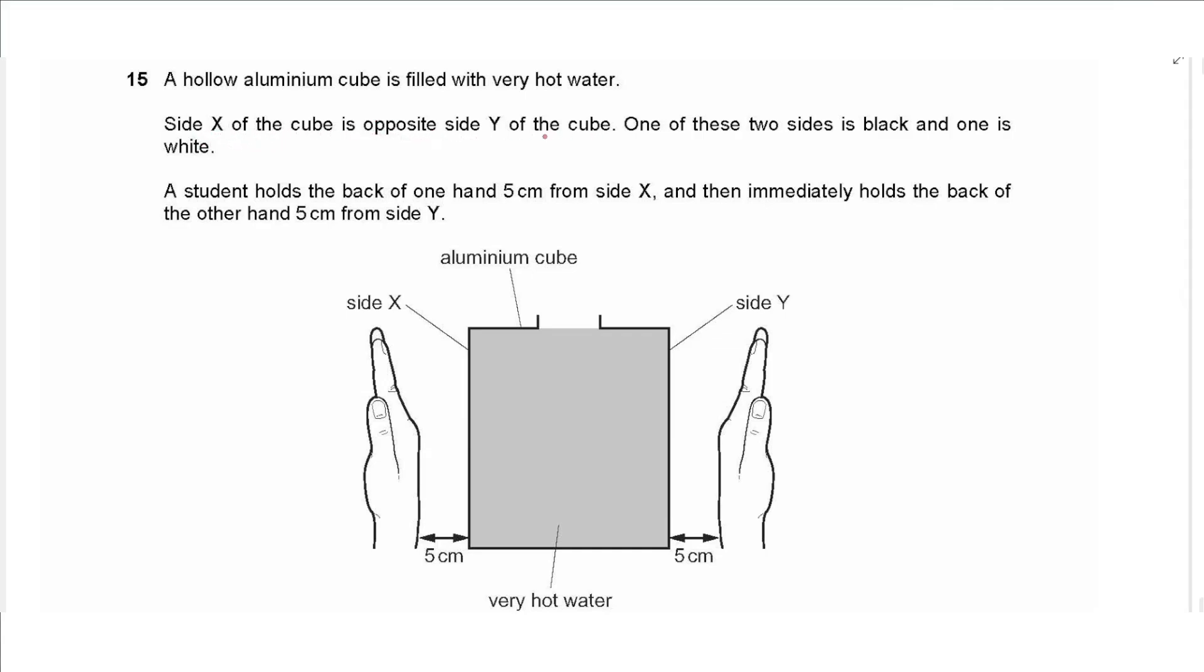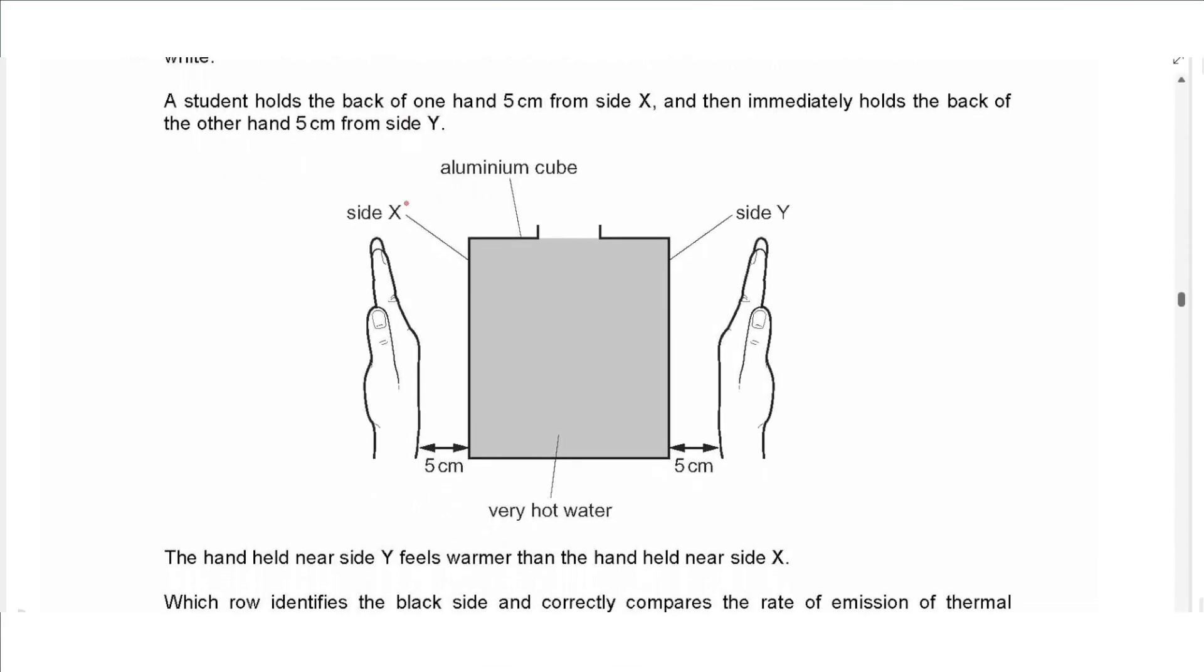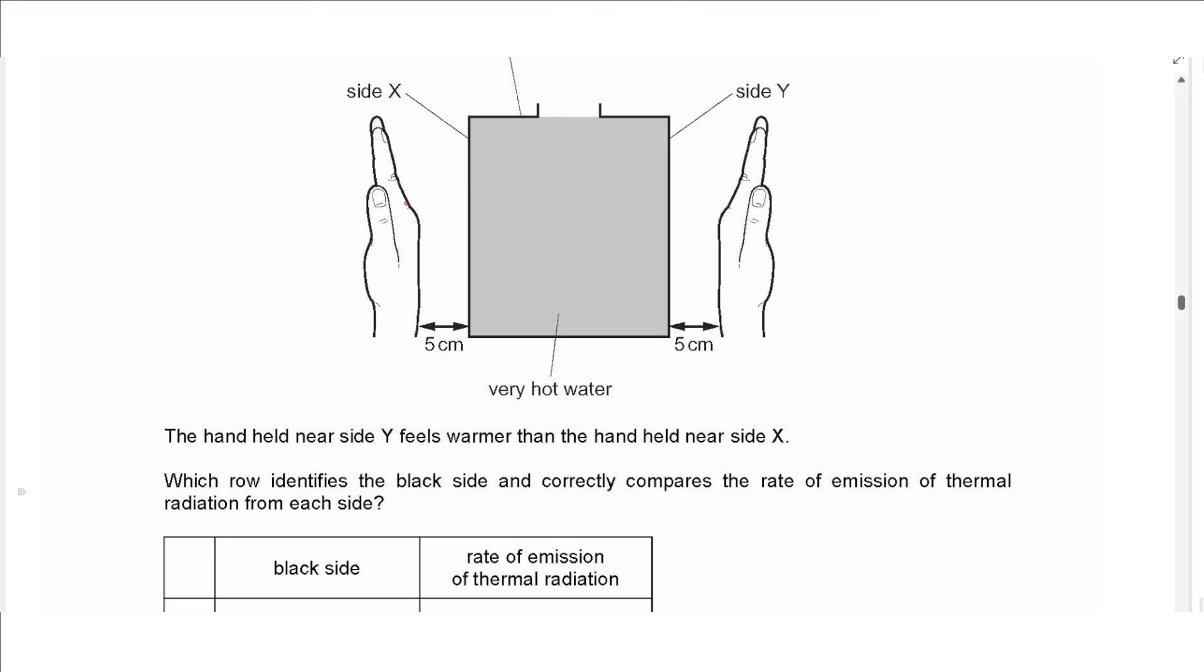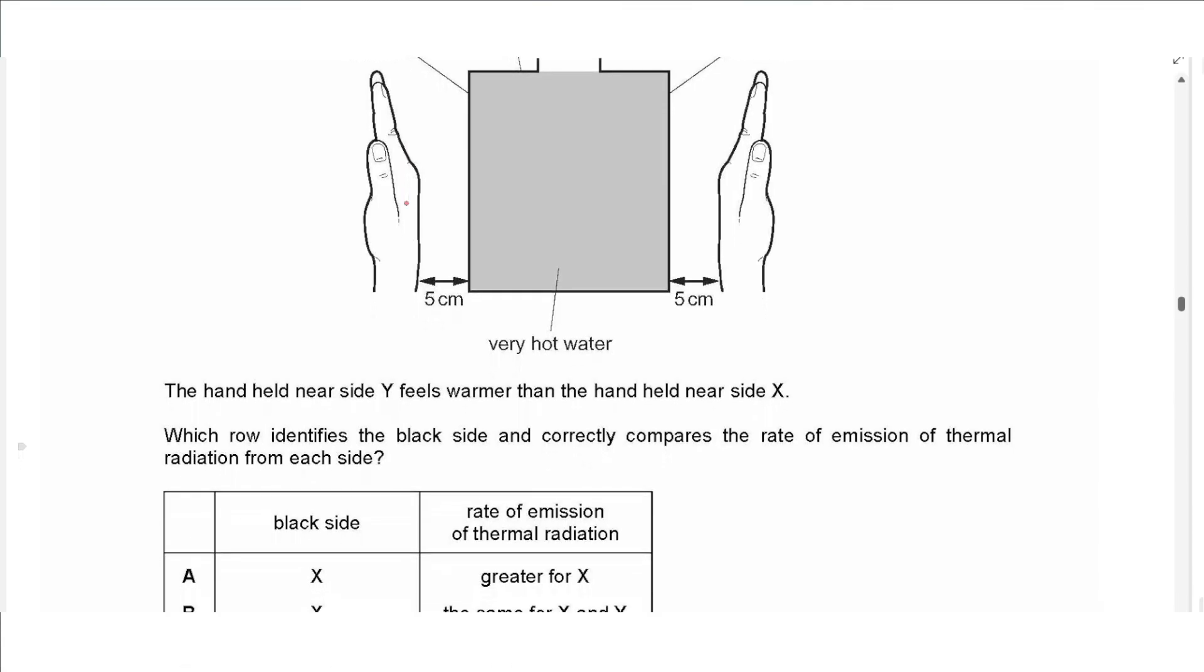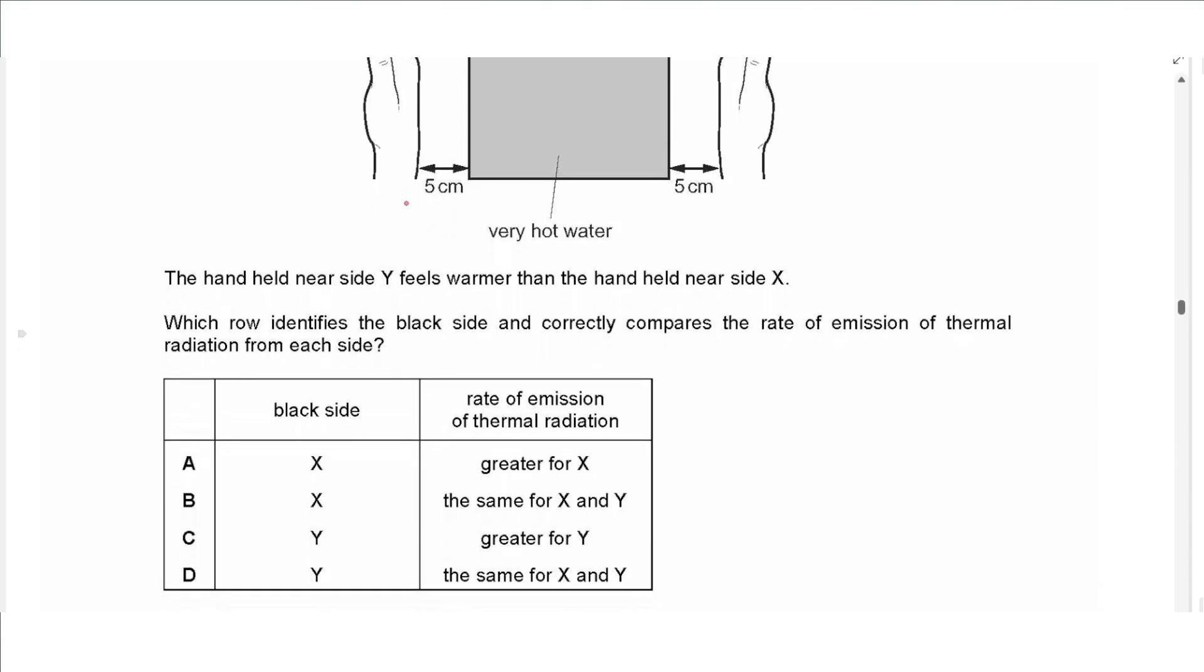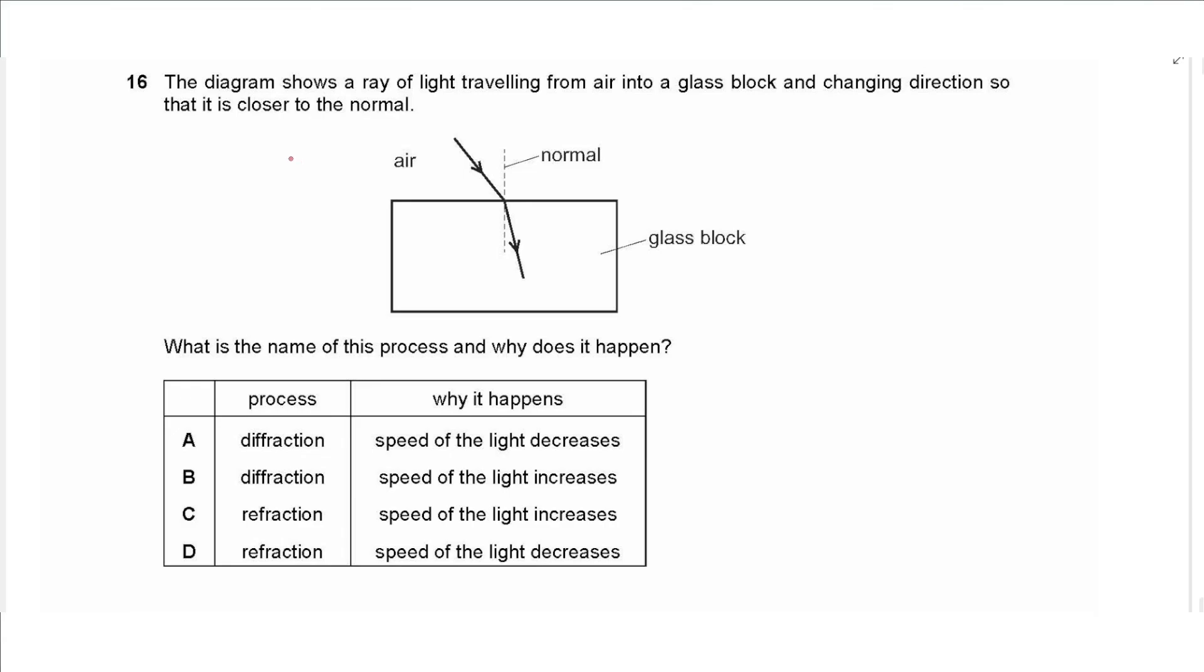Question 15 says a hollow aluminum cube is filled with very hot water. Side X of the cube is opposite to side Y of the cube. One of these two sides is black and one is white. A student holds the back of one hand five centimeters from side X and then immediately holds the back of the other hands five centimeters from Y. For fair comparison the hand held near side Y feels warmer than the hand near side X. Which row identifies the black side and correctly compares the rate of emission of thermal radiation? So the hotter one will be the black one and will have the greater rate of thermal emission, so we choose C.